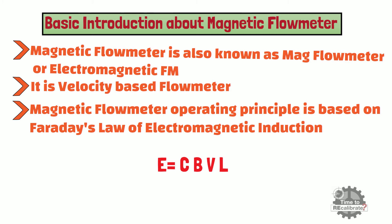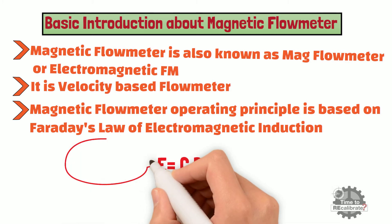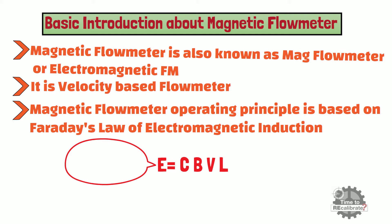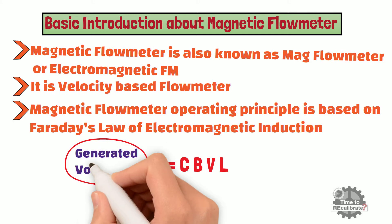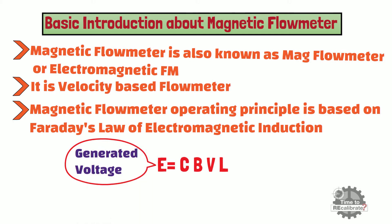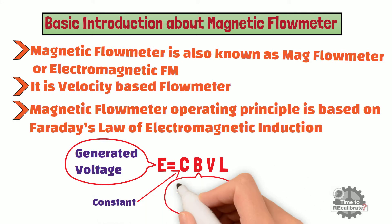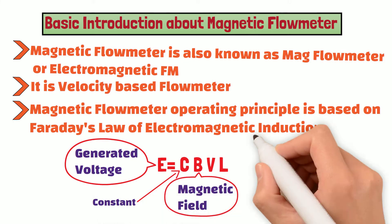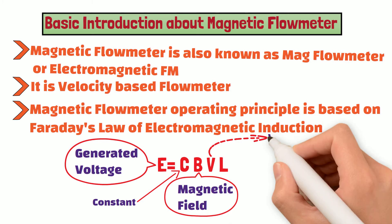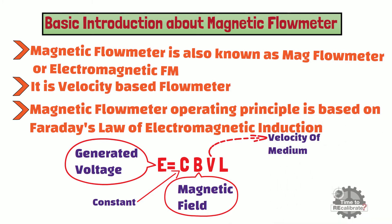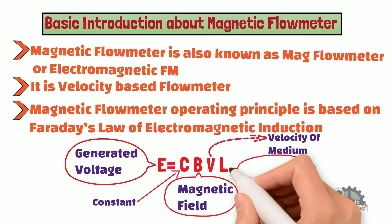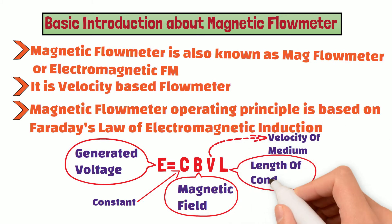The equation is: E = C × B × V × L, where E stands for generated voltage, C is a constant, B stands for magnetic field strength, V stands for velocity of the medium, and L is the length of the conductor.